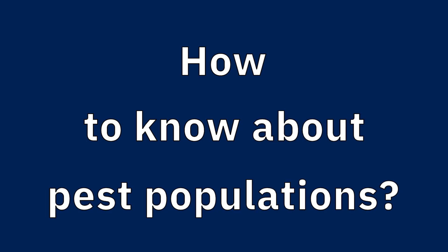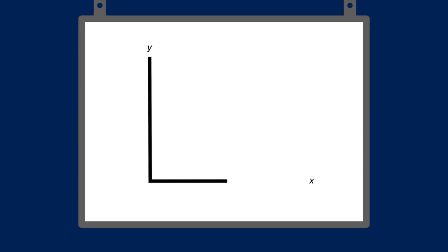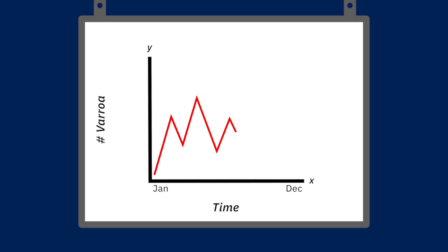I'm going to break down those constituent parts. First, I want to talk about the science associated with knowing pest populations in a colony. I have a simple chart with a y-axis and an x-axis. The x-axis represents time — from January to December — walking us through the time of year. The y-axis is the number of pests; in our case, the number of Varroa. So over time throughout the year, you could expect your Varroa populations to go up or down.